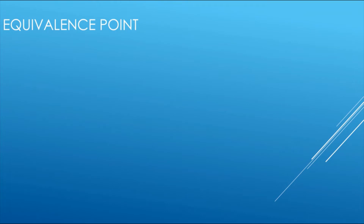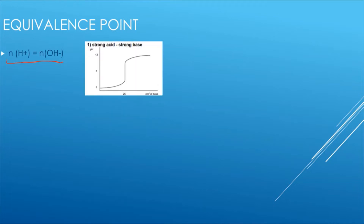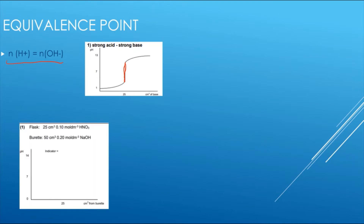You need to be aware of the equivalence point. This occurs when the moles of H⁺ are equal to the moles of OH⁻, so they cancel each other out — this is also called the neutralization point. On a graph, this equivalence point sits inside the large vertical section, and you can be asked to find it and draw the neutralization graph for a particular reaction.